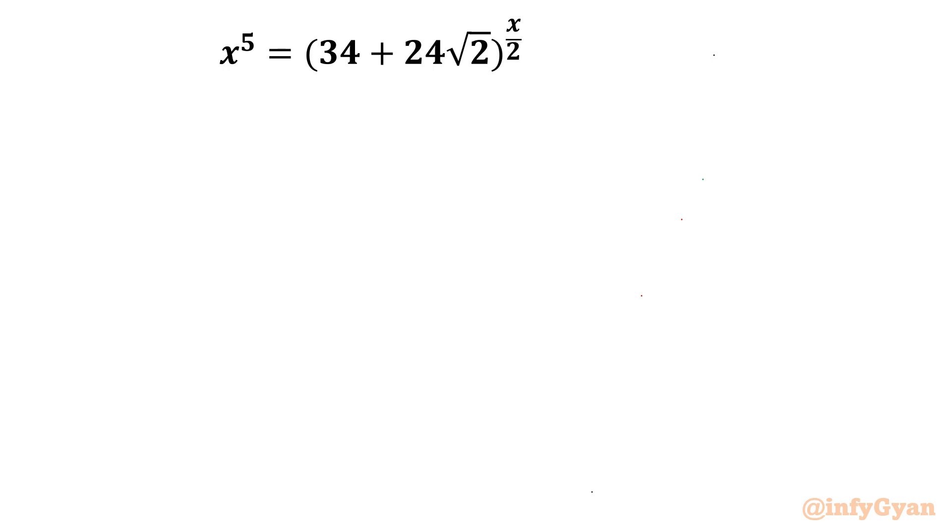In this very exciting video of algebraic equations, we are going to solve one very interesting exponential equation: x power 5 equal to 34 plus 24 square root 2 whole power x by 2. I will use Lambert W function to solve this, and then we will conclude this video by Wolfram Alpha graph. So let us get started.